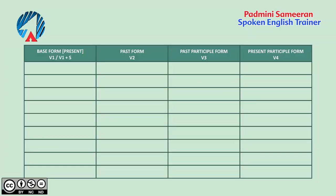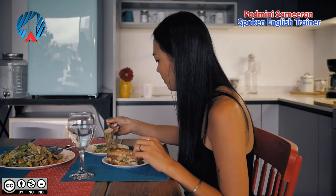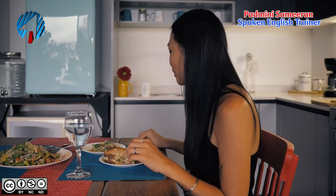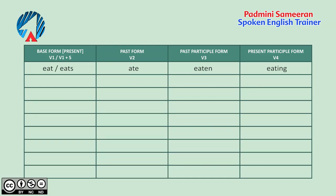Now let's look at the different forms of verbs with some examples. If you look at the base form, we have for example 'eat'. The base form can have two forms: eat and eats. The past form is 'ate', the past participle form is 'eaten', and the present participle form is 'eating' — which is simply the -ing form of the verb eat. You must know these four forms for every action word.